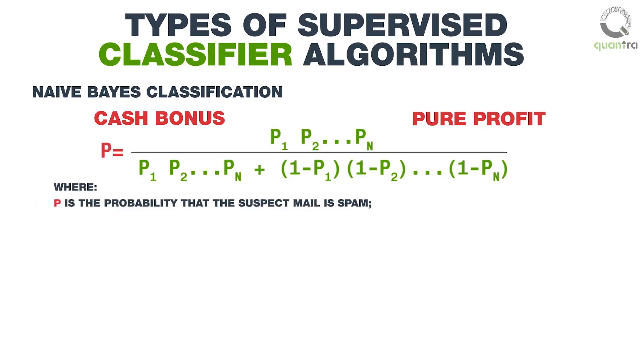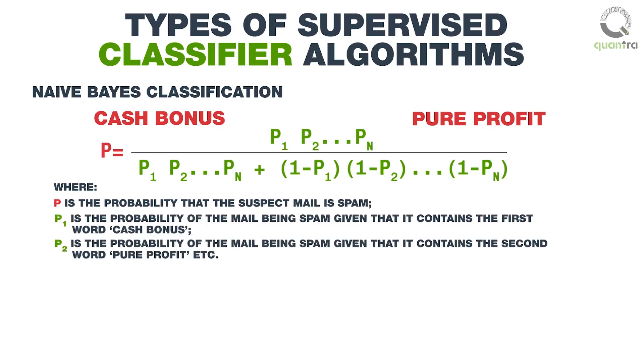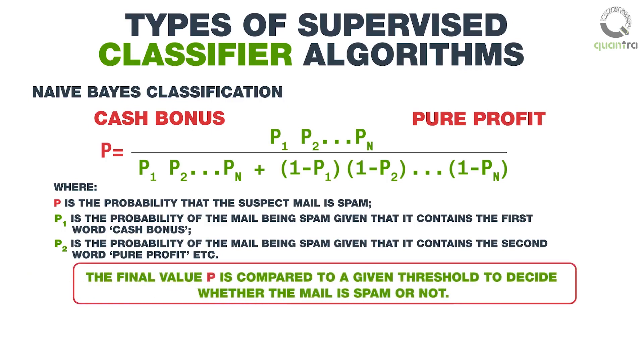Where P is the probability that the suspect mail is spam. P1 is the probability of the mail being spam given that it contains the first word cash bonus. P2 is the probability of the mail being spam given that it contains the second word pure profit, etc. The final value of P is compared to a given threshold to decide whether the mail is spam or not.